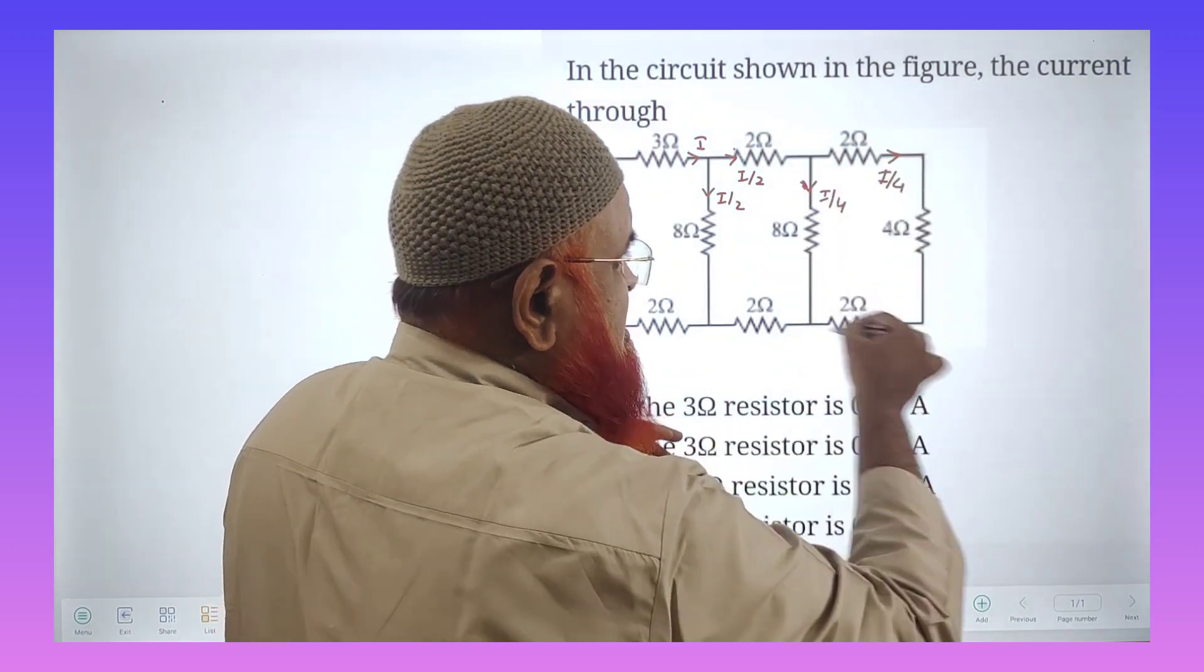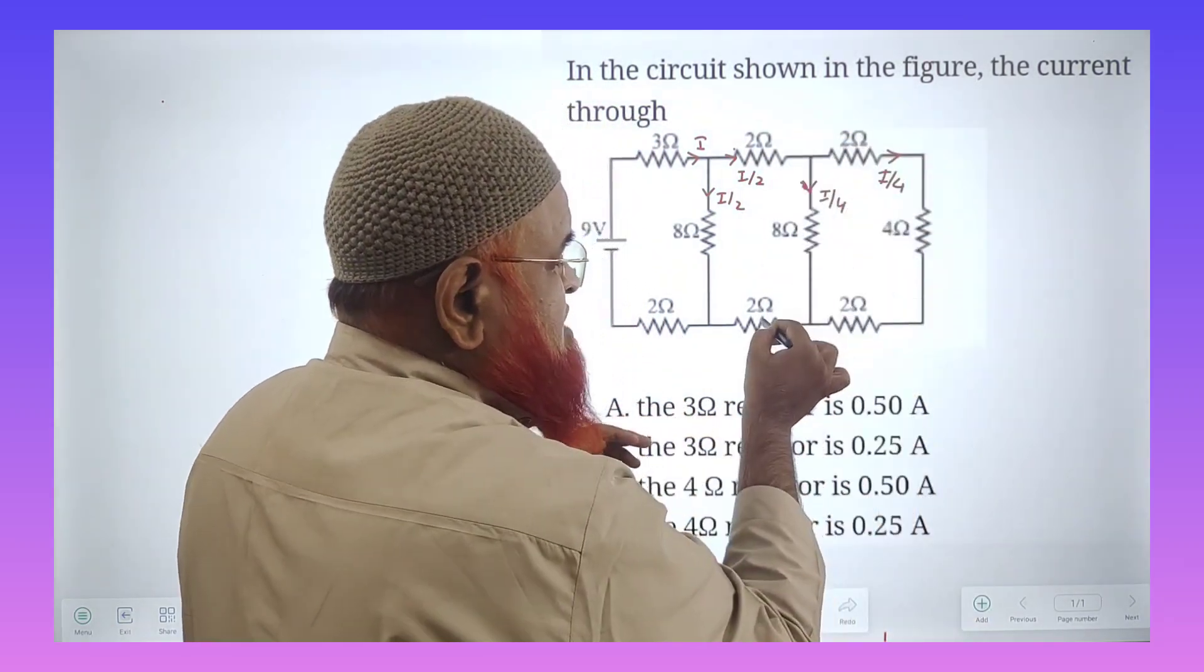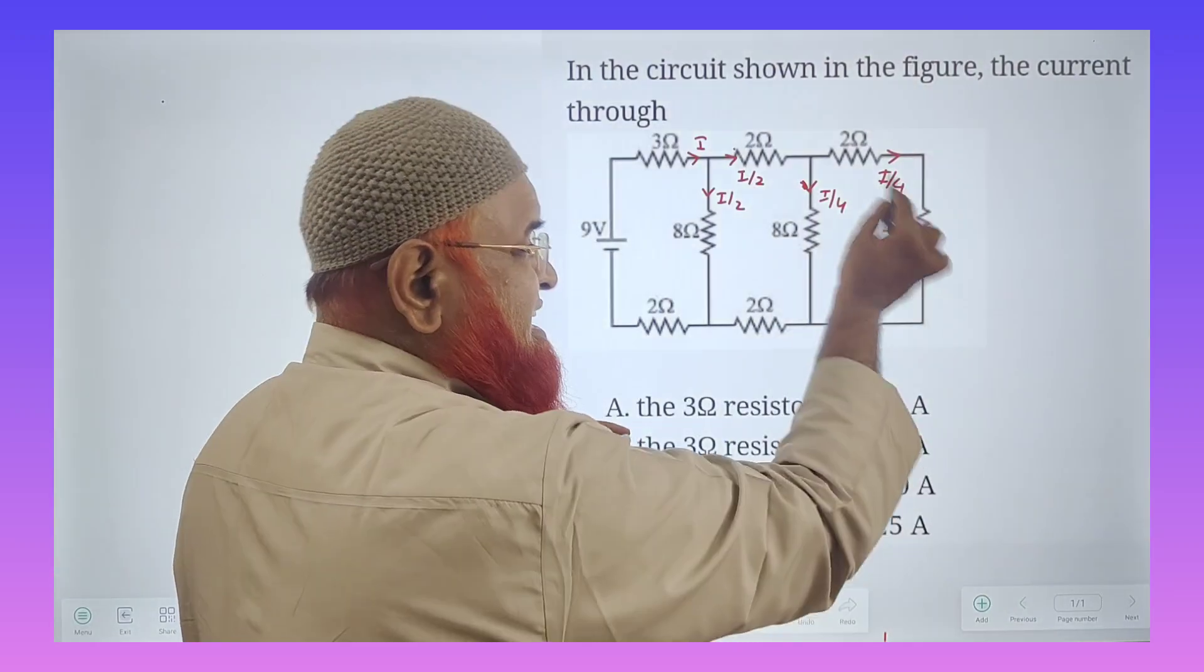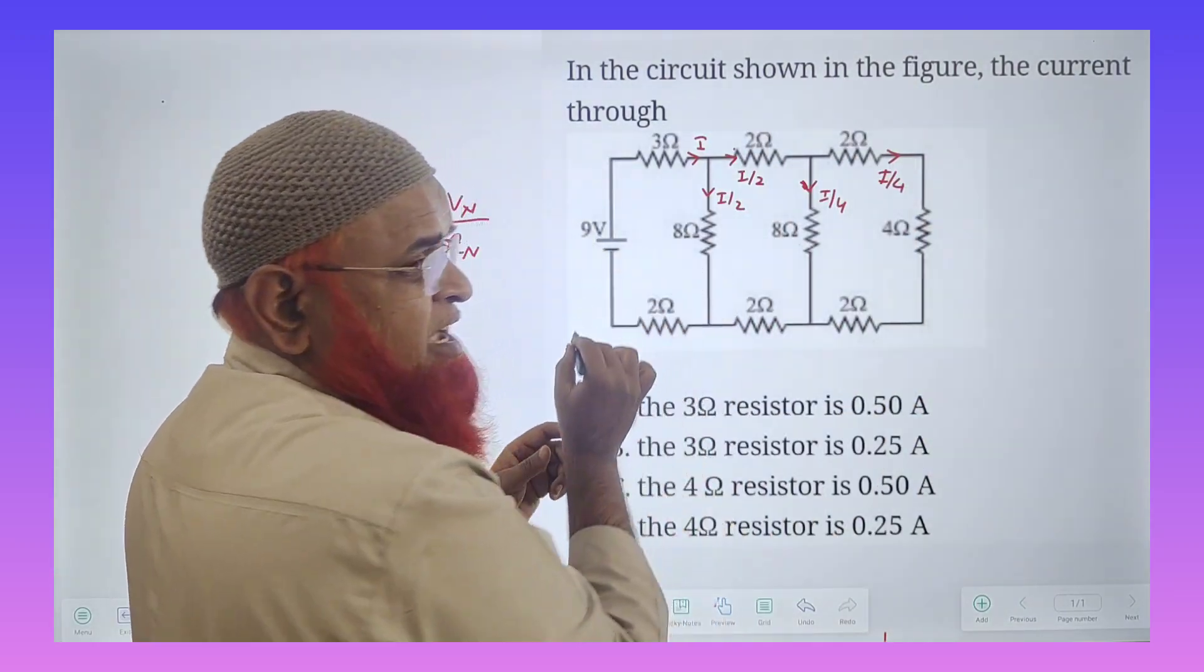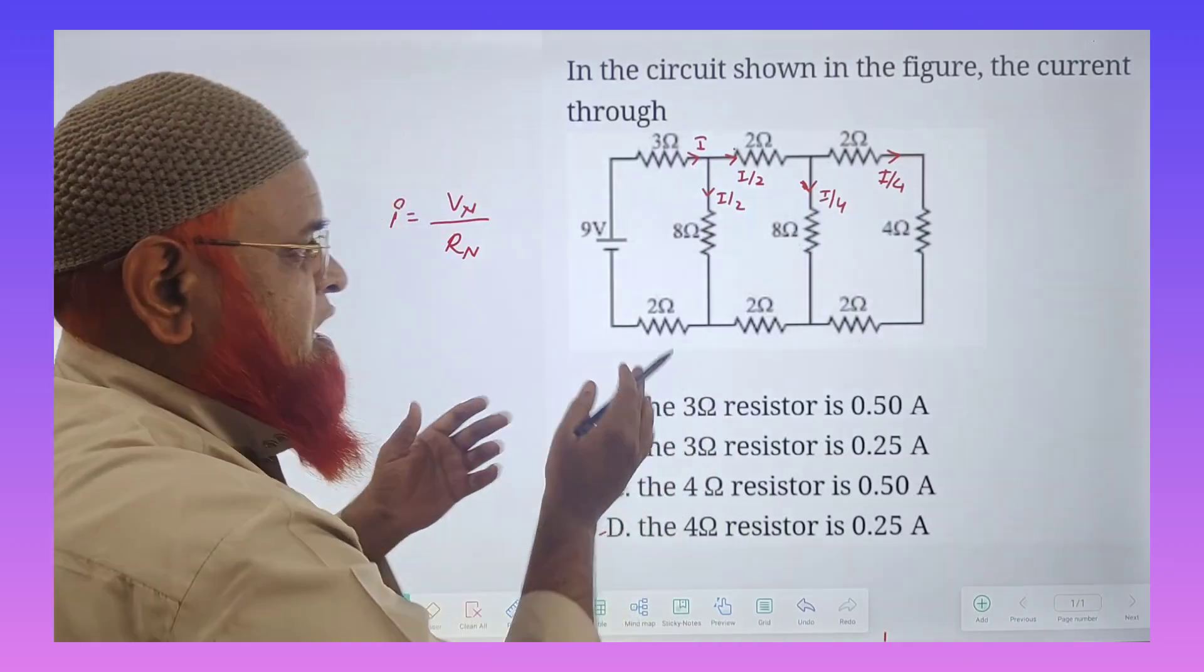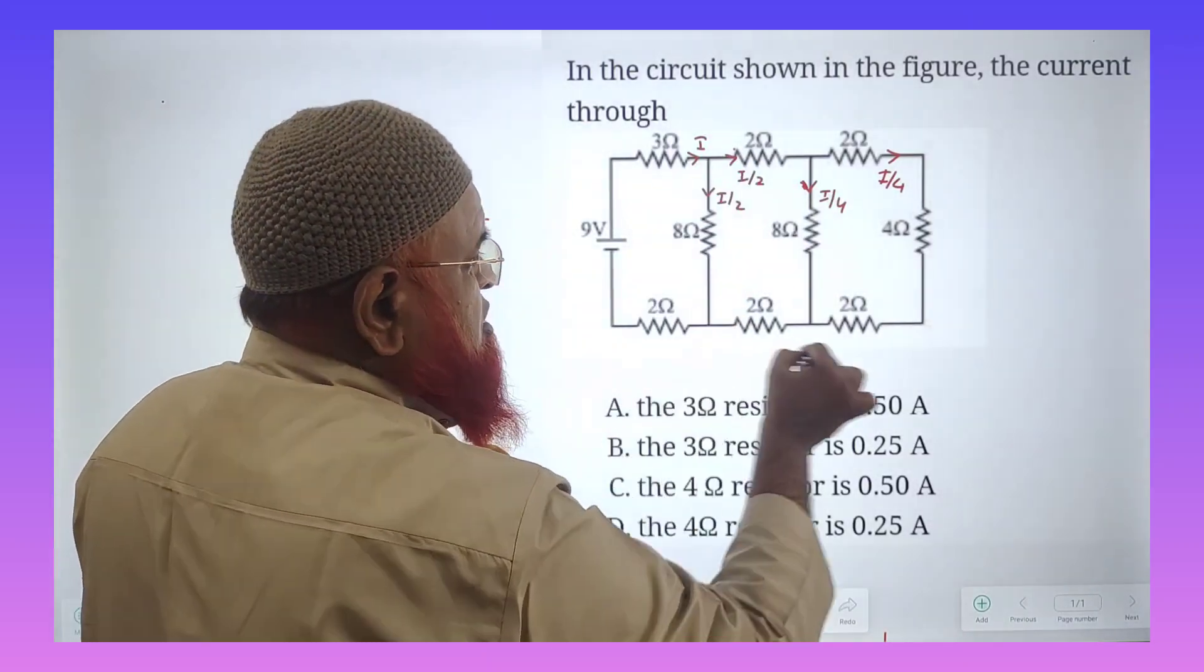Now 2 plus 4 imaginary 4. 2 plus 4 plus 2 is again 8. This is totally 8 here. 8 is again in parallel with 8. It is going to be 4 again. So this total is going to be 4 now.